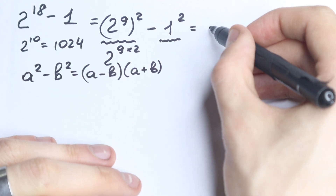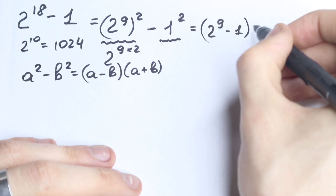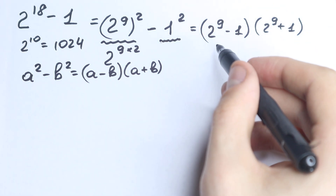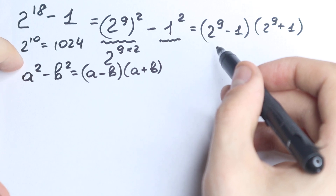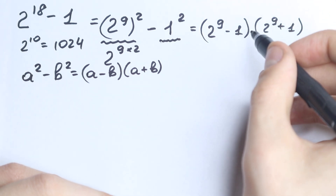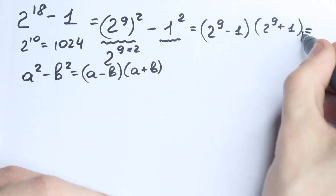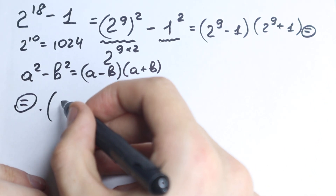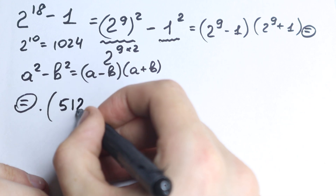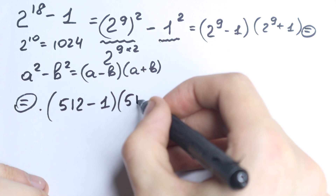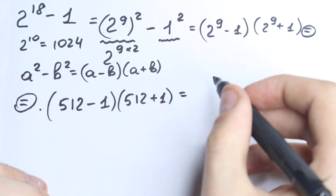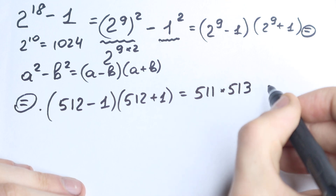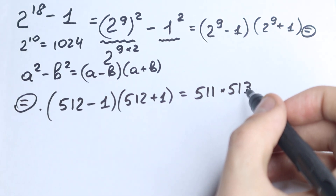So applying the formula — the difference and then the sum — we have (2 to the power 9 minus 1) times (2 to the power 9 plus 1). Now 2 to the power 9 equals 512, so from a new line: (512 minus 1) times (512 plus 1), which gives us 511 times 513.